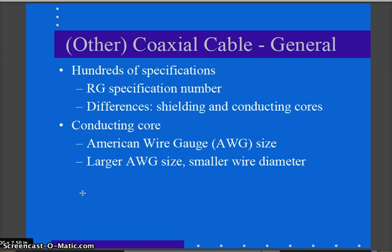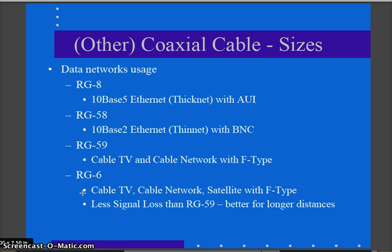The differences between coax types are designated with an RG specification number, which tells you about the shielding and the size of the cable conductor. The conducting core is measured by American Wire Gauge. Going back to the beginning, RG8 was your 10Base-5 Ethernet — your thicknet — the original coax bus cable used in early Ethernet.